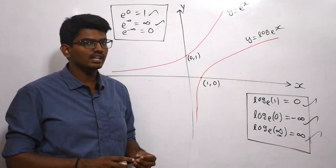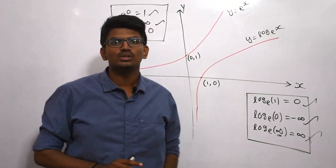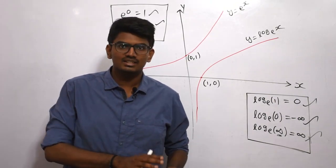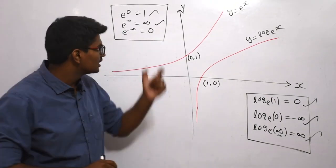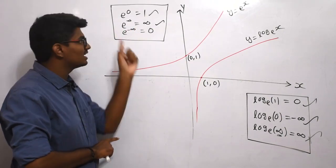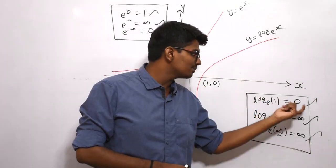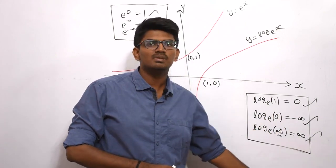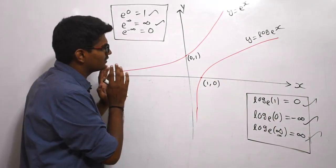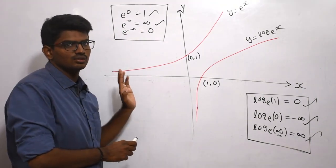These are the things you need to note down. All these formulas you need to remember — there is no other choice. For any competitive examination you have to remember: e power 0 equals 1, e power infinity equals infinity, but e power minus infinity equals 0. Log of 1 equals 0, log of 0 equals minus infinity, and log of infinity equals infinity. If you have an idea about the curve, you can easily judge these values.